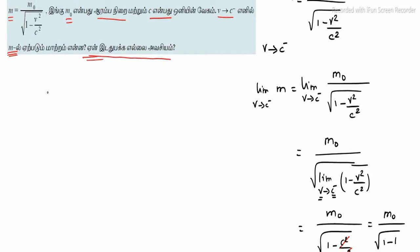So limit as v tends to c minus of m = m0 divided by square root of 1 minus v squared divided by c squared, which tends to infinity.